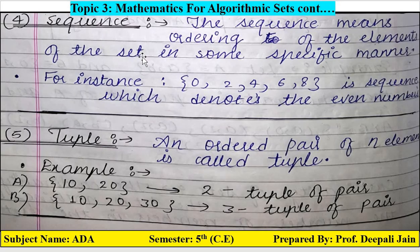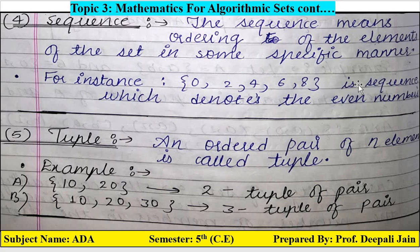Next is sequence. Sequence means ordering of the elements of the set in some specific manner. For example, even number sequence: 0, 2, 4, 6, 8 — all are even numbers. Another example: 0, 1, 3, 5, 7 — this is a sequence which denotes the odd numbers.